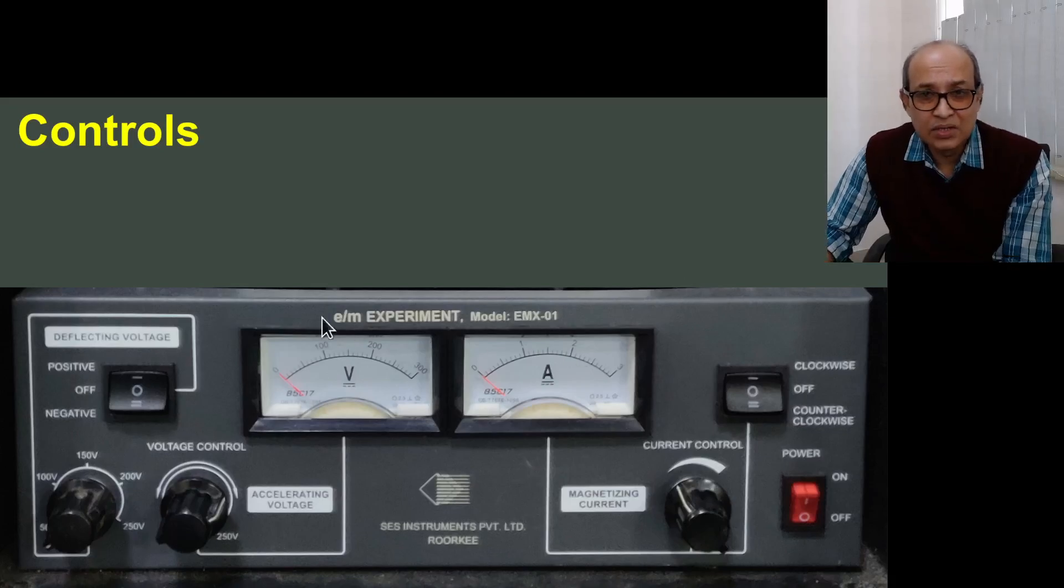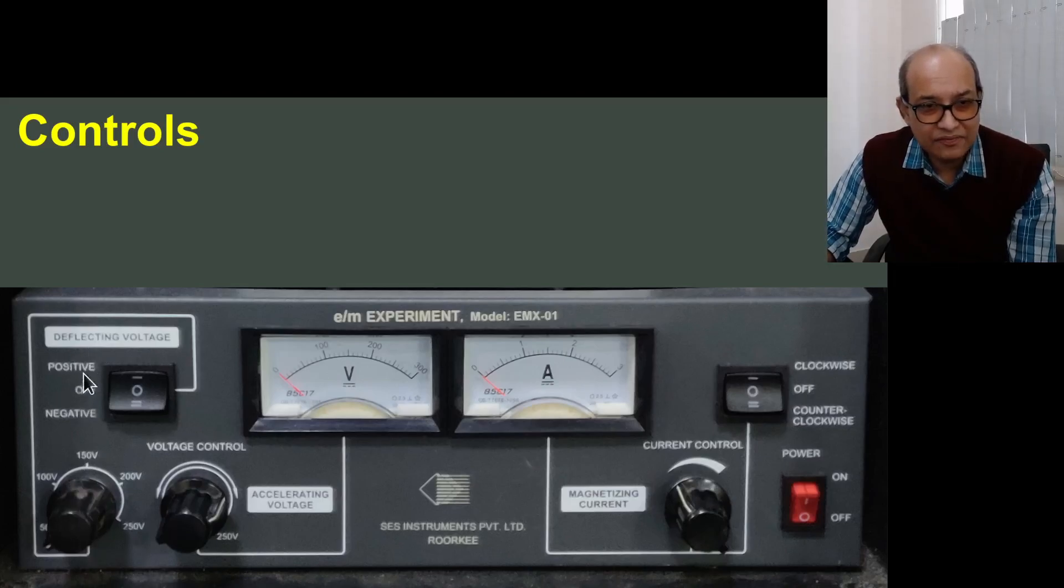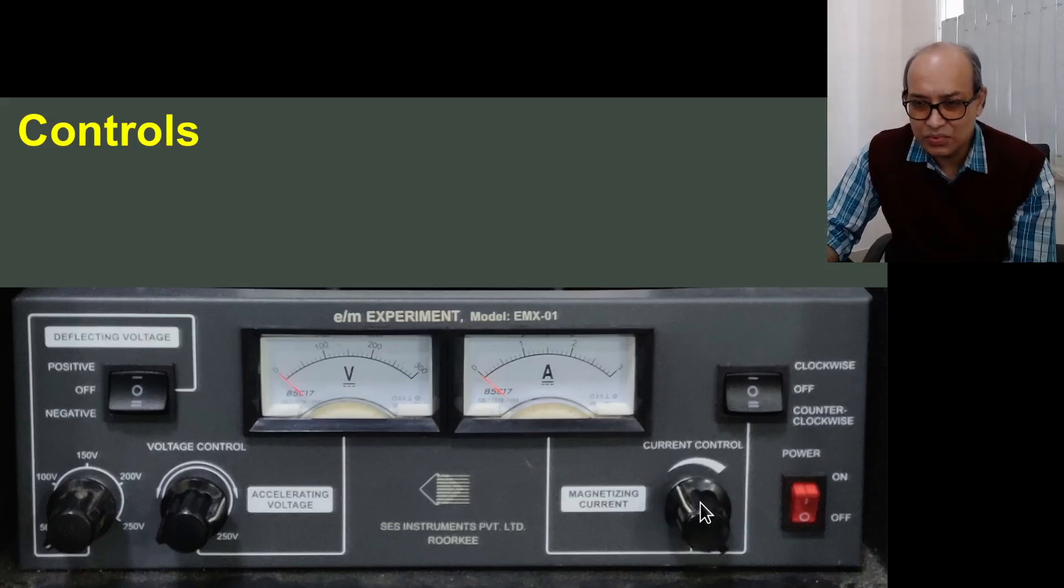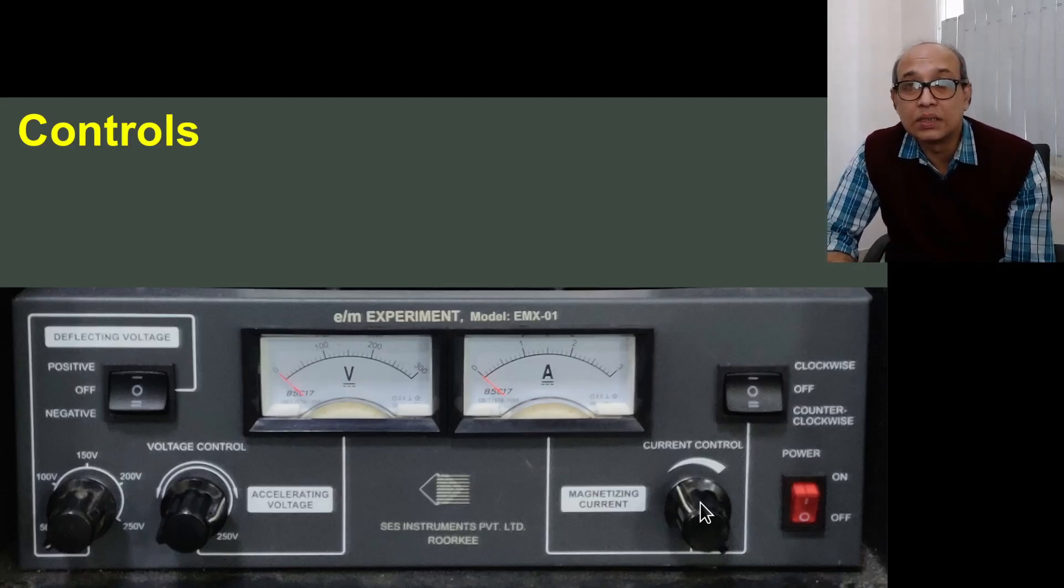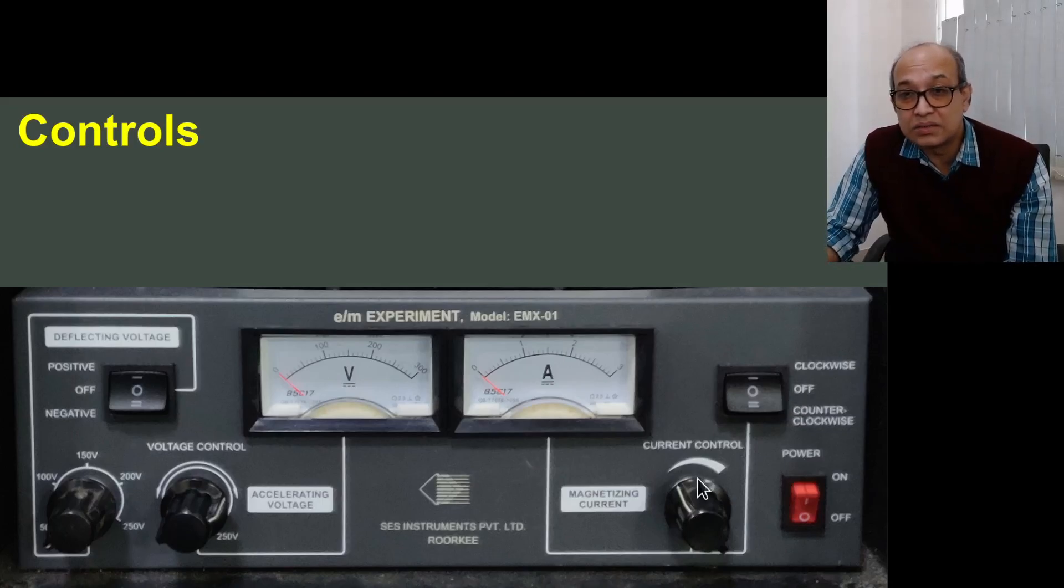And finally we come to the control box. The control box has three knobs. The left one is for changing the deflecting voltage. At this stage we will not consider this. Our main knobs are the potential knob which controls the delta V, this one, and we also have the magnetizing current knob. This is the knob using which you control the current which is passing through the Helmholtz coil. Essentially you are controlling the magnetic field. So if you increase the current, the magnetic field will be higher, and so on and so forth.